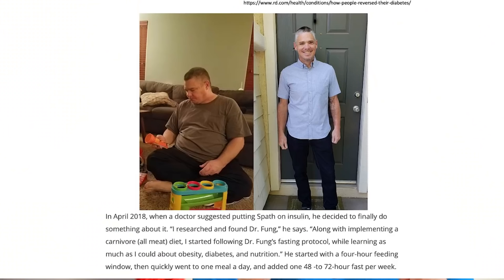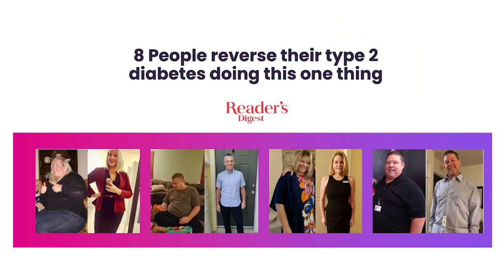Fasting is a great tool for the treatment of type 2 diabetes, and a lot of people have been able to use it successfully to reverse their type 2 diabetes. As shown in an article from Reader's Digest, a number of people were able to reverse their disease simply by doing intermittent fasting. Thanks for watching everybody. If you're interested, you might want to look at my video on type 2 diabetes and how fasting can help for more information. Thanks everybody, I'll see you next week.